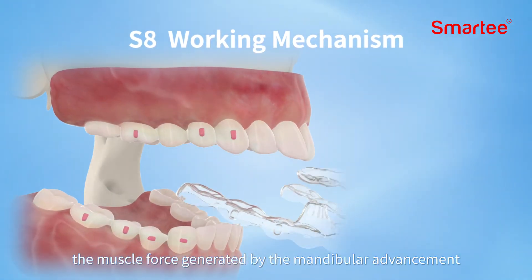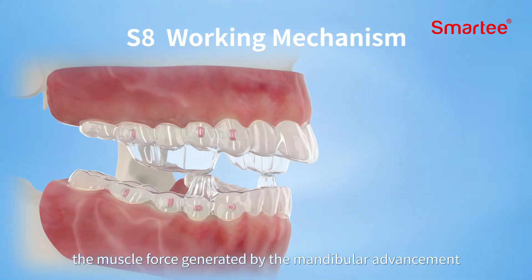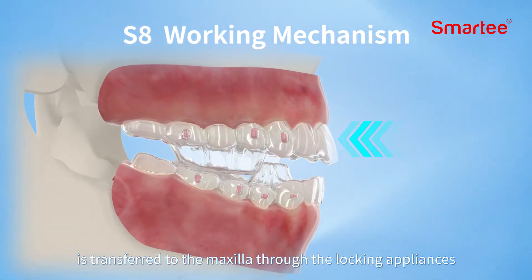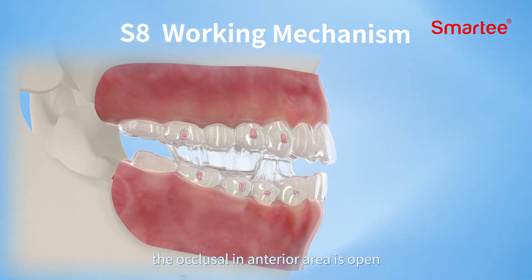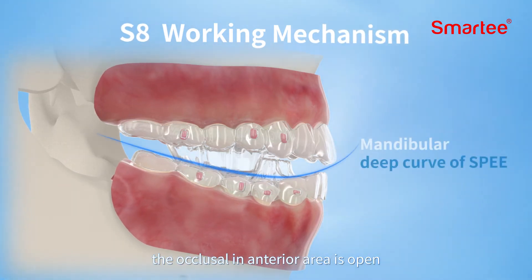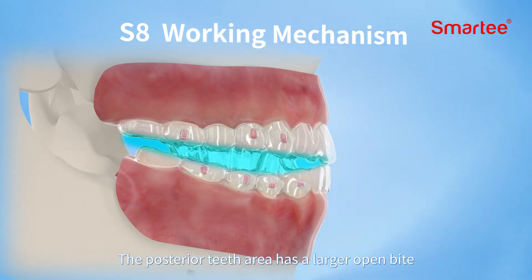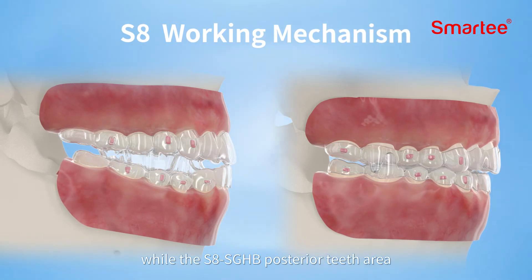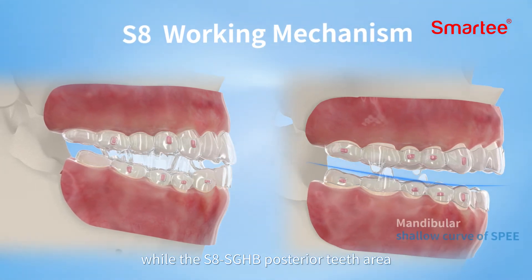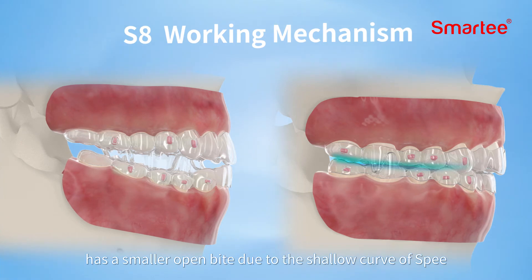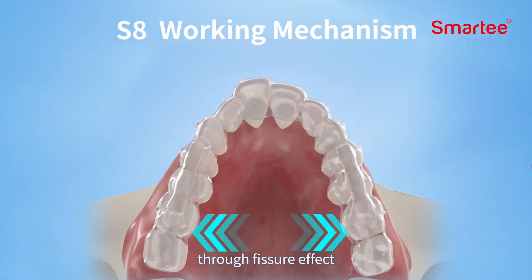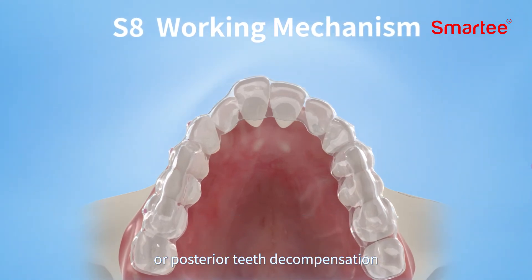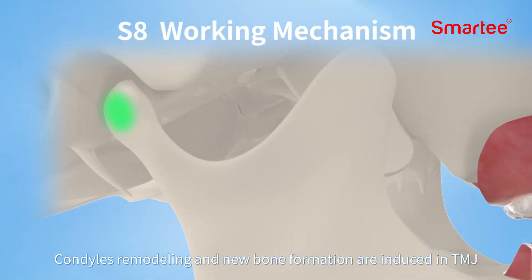In terms of mechanism, S8 SGTB and S8 SGHP are basically the same in the sagittal direction: the muscle force generated by mandibular advancement is transferred to the maxilla through the locking appliances to move the maxilla backward. In the vertical direction, the anterior area is open; the posterior teeth area has a larger open bite for SGTB due to the deep curve of Spee, while SGHP has a smaller open bite due to the shallow curve of Spee. Horizontal expansion of the maxilla is conducted through fissure effect or posterior teeth, and condylar remodeling and new bone formation are induced in the TMJ.